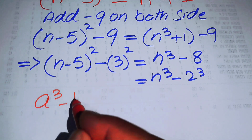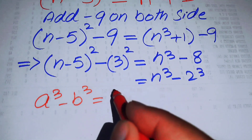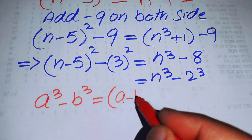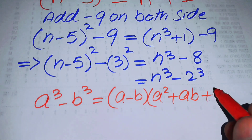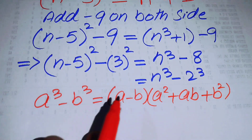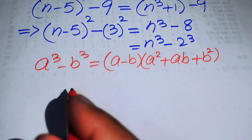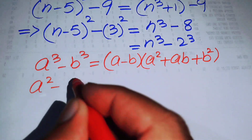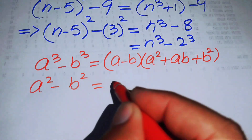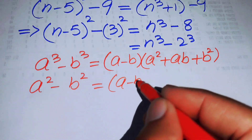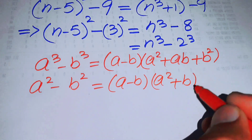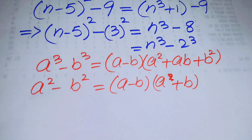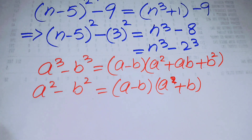The first formula is the difference of cubes: a³ - b³ = (a - b)(a² + ab + b²). The second is the difference of squares: a² - b² = (a - b)(a + b). We apply the cubic formula to the right-hand side and the square formula to the left-hand side.